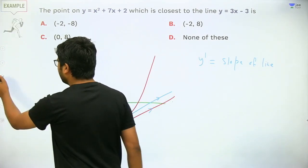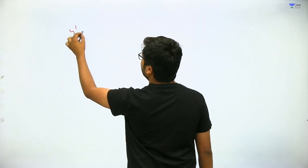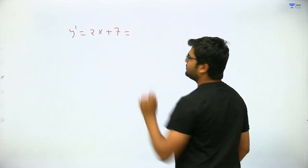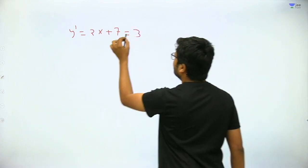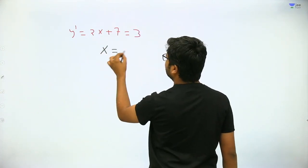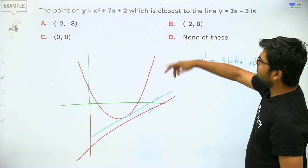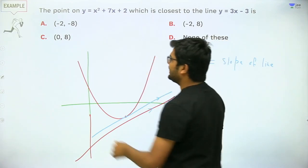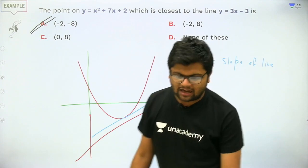The slope of the tangent is y' = 2x + 7. Setting this equal to the slope of the line, which is 3, gives x = −2. Substituting x = −2 into the curve: y = 4 − 14 = −8. So the point is (−2, −8), which is answer A.